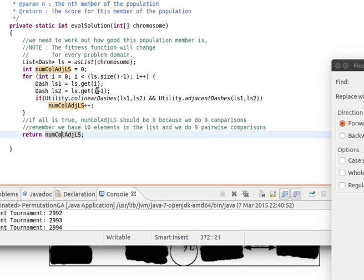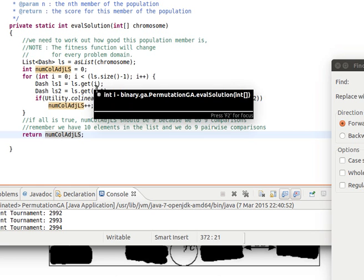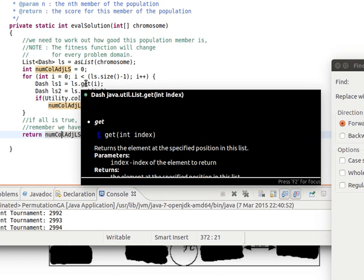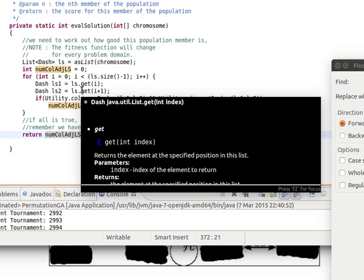And then what we do is, we just compare each element with the element after it. So, I compared to I plus one. So, zero, compare the element at index zero, compare it with element at index one. And then compare element at index one against element at index two, and so on and so forth.